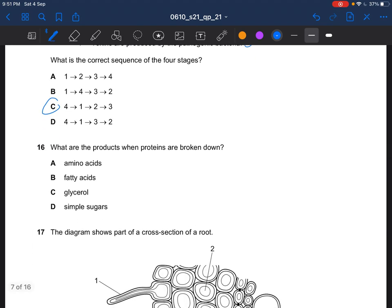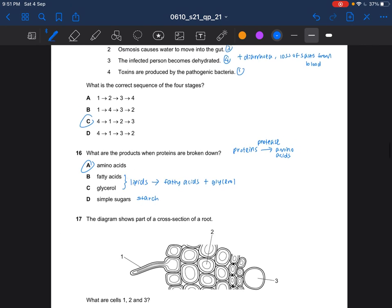Next question. What are the products when proteins are broken down? Proteins are broken down to amino acid. So the answer would be A. Fatty acids and glycerol would be lipids. Lipids would break down to fatty acids and glycerol. And this seems to be starch. So the answer for question 16 is A.